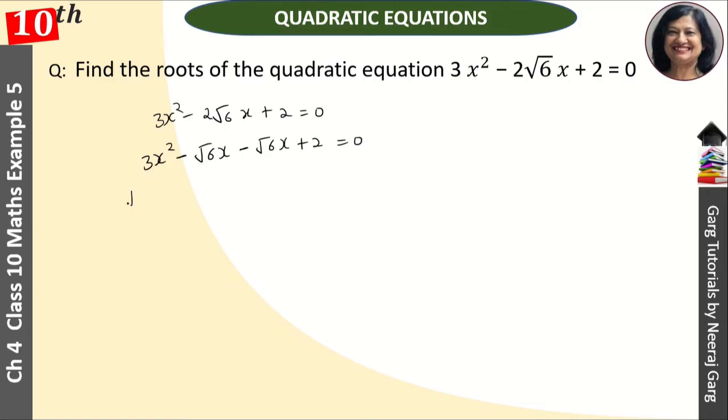We can write root 3 into root 3x square, minus root 6x minus root 6x and plus 2, we can write root 2 into root 2. Now, you can understand very well. Now let's see what is common here.